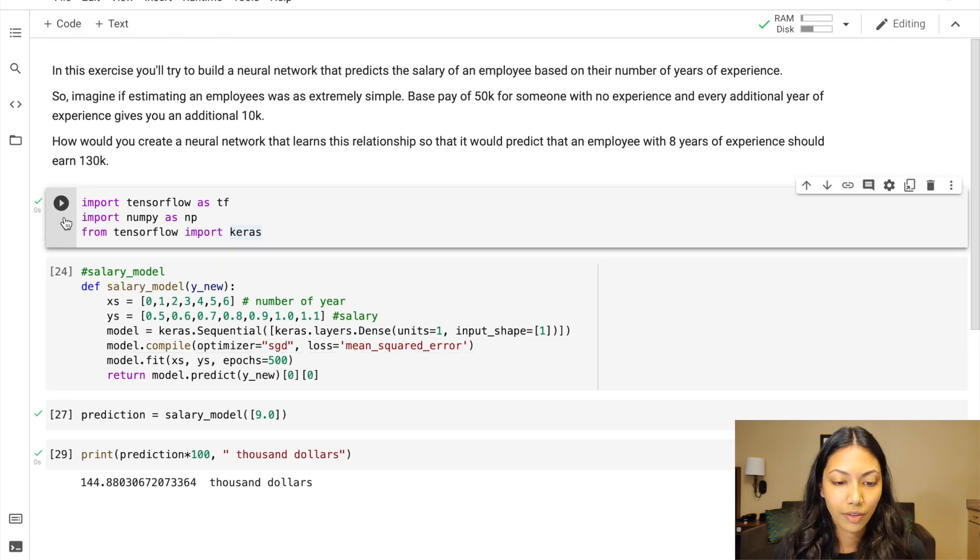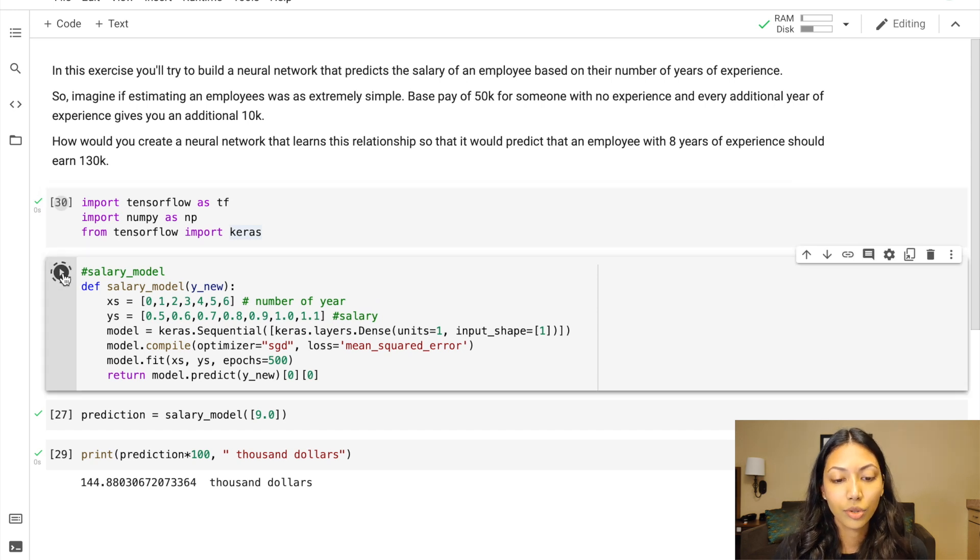And lastly, we have a return function because obviously, our model needs to return what value it has predicted. So what we're going to do is we're going to run the first box of code with the import functions and then also the second box of code with our model definition.